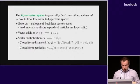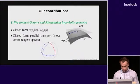In our work, we rely on the gyrovector space framework to generalize basic operations and neural networks in the hyperbolic space. This framework provides an analog of Euclidean vector spaces, and it has strong connections with relativity theory. Vector addition, scalar multiplication, distance function and geodesics have closed form in this framework.